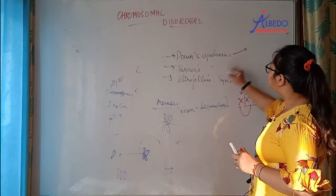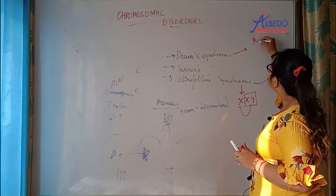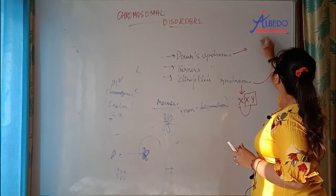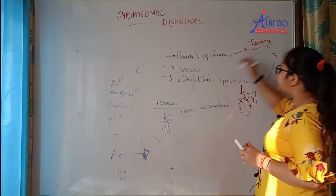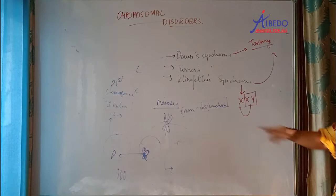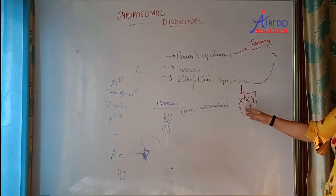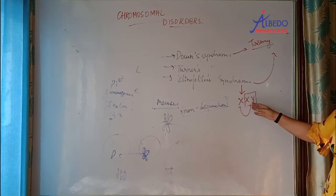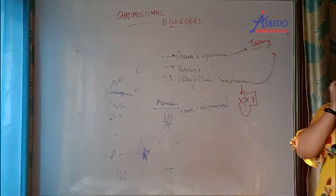Down syndrome and Klinefelter syndrome are both examples of trisomy — not monosomy. Both are examples of trisomy.